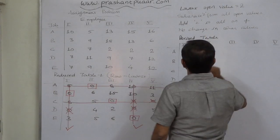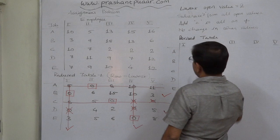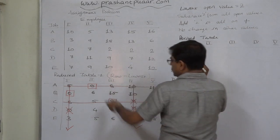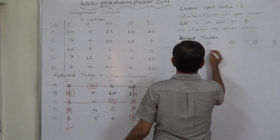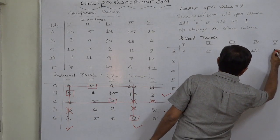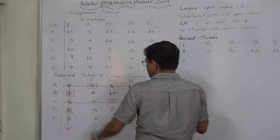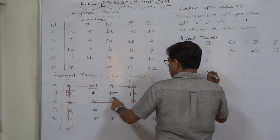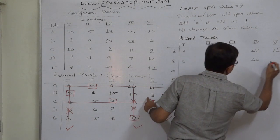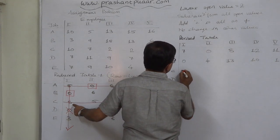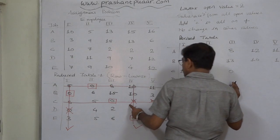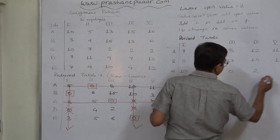Subtracting the lowest open value of 2 from all open values, and adding 2 at intersection points: 5+2=7, 0 remains 0, 8 remains 8, 10+2=12, 11 remains 11. For open values: 6−2=4, 15−2=13, 10 stays same. 3−2=1, 3−2=1, 8+2=10 at intersection, 5 stays, 0 stays, 0 stays.